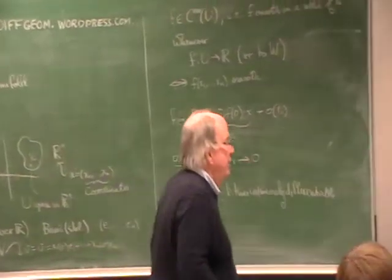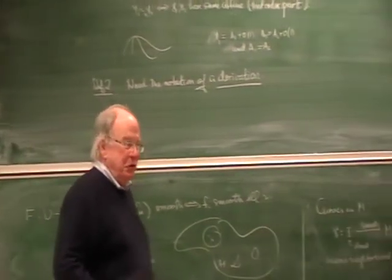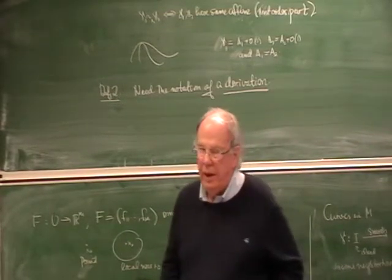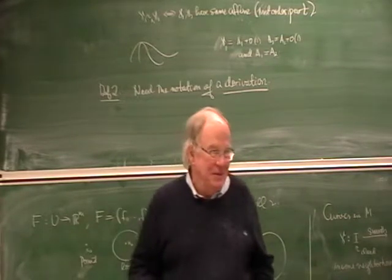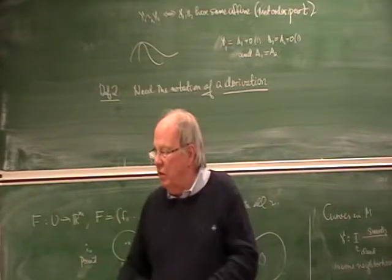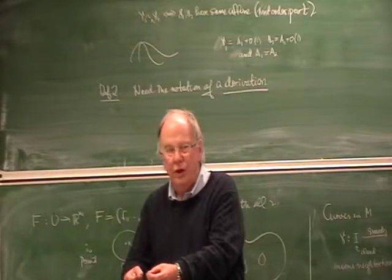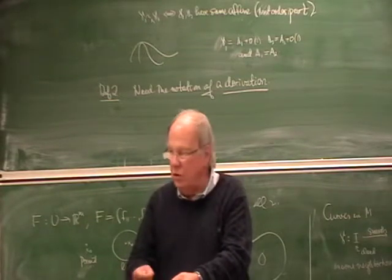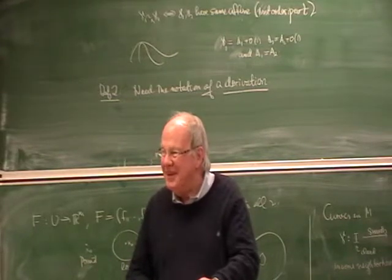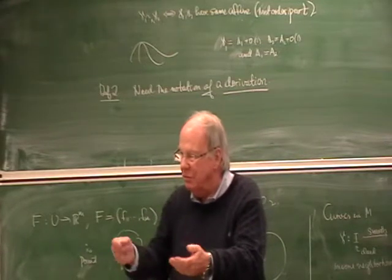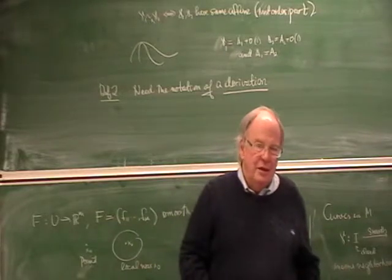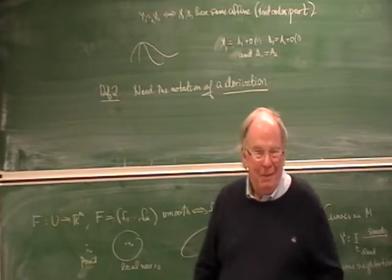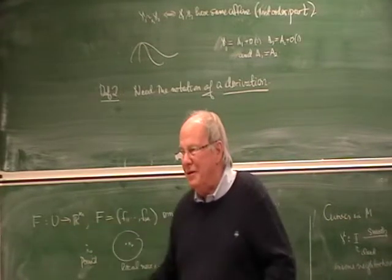Derivation defined on some algebraic object where you can add and multiply — for example, you take a function and multiply by another function, that's still a function. Those two operations — addition and scalar multiplication af + bg — mean this object is called an algebra. We talk about derivations on an algebra. In our case the algebra is C∞ functions where you can multiply the two things.